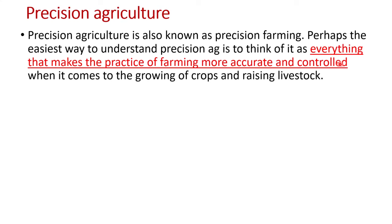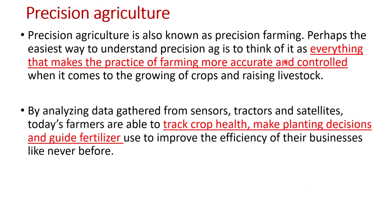Precision agriculture could be related to crops or to livestock. We use different tools, machines, tractors, and sensors, and the goal of using all these sensors and machines is to collect data. After collecting data, we analyze it — data gathered from sensors, tractors, and satellites — so that today's farmers are able to track crop health, make planting decisions, and guide fertilizer use, making our farming system more effective and more profitable.